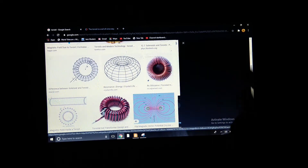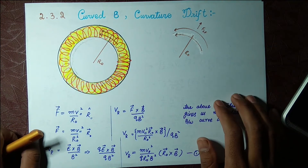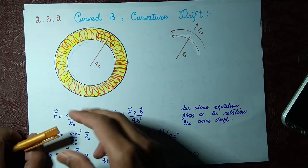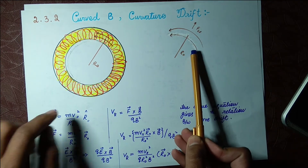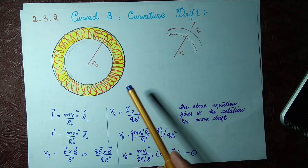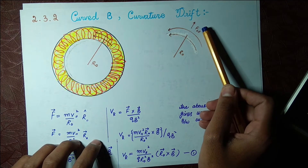Let's move toward the lecture now. This is a toroid, and we say it has some center. From the curved magnetic field, I've shown you how it forms curved magnetic field lines. These curved magnetic field lines - we can see this is F - and we are going to use this F.